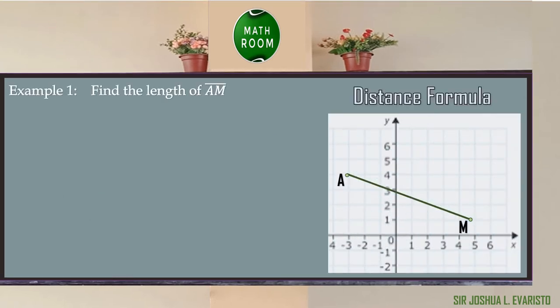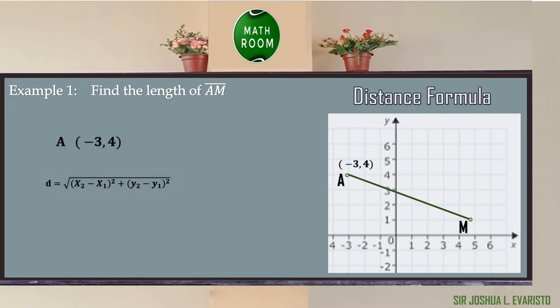Let's have an example. We are going to find the length of segment AM. Since we are looking for the length, we will use the distance formula. First, we need to get the coordinates of the endpoints A and M. The coordinates of point A are negative 3 comma 4, and the coordinates of point M are 5 comma 1.